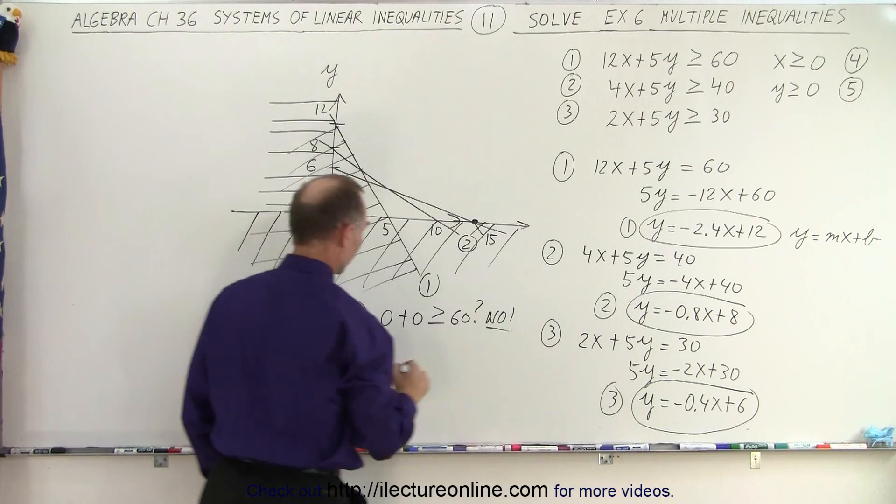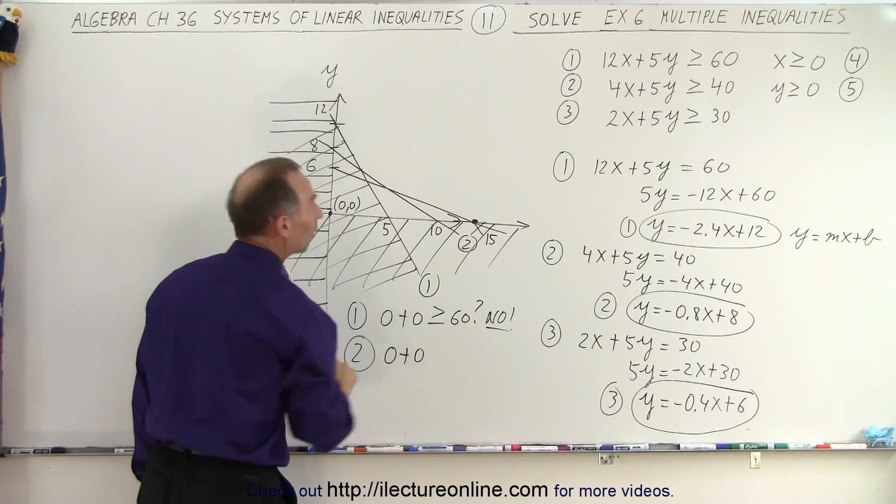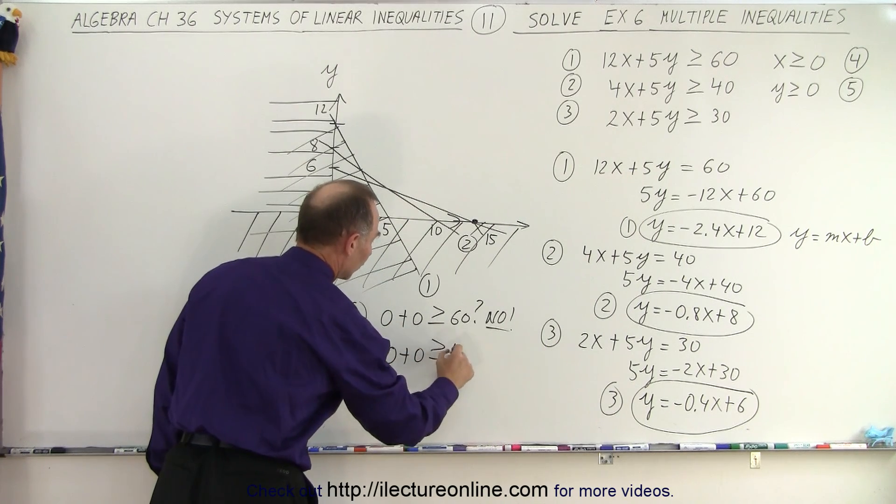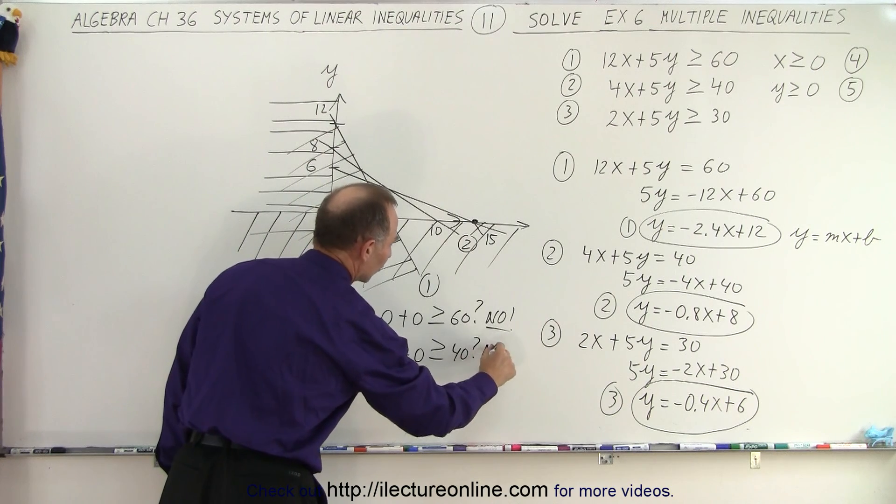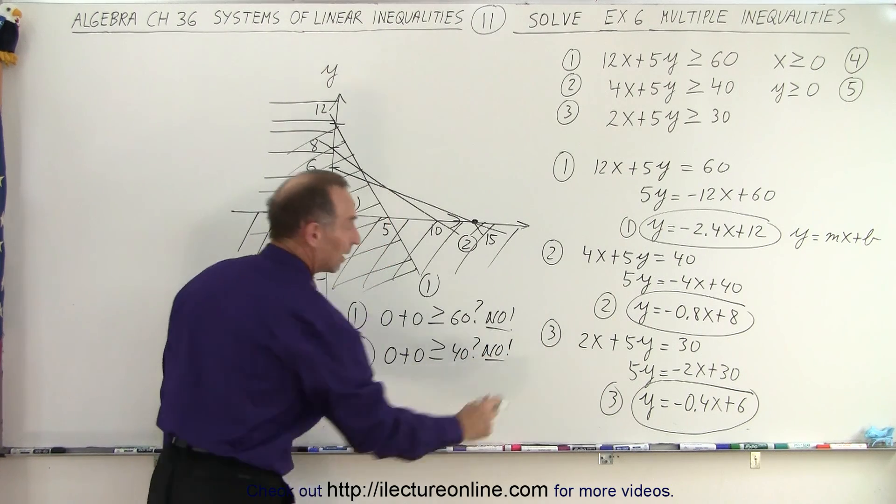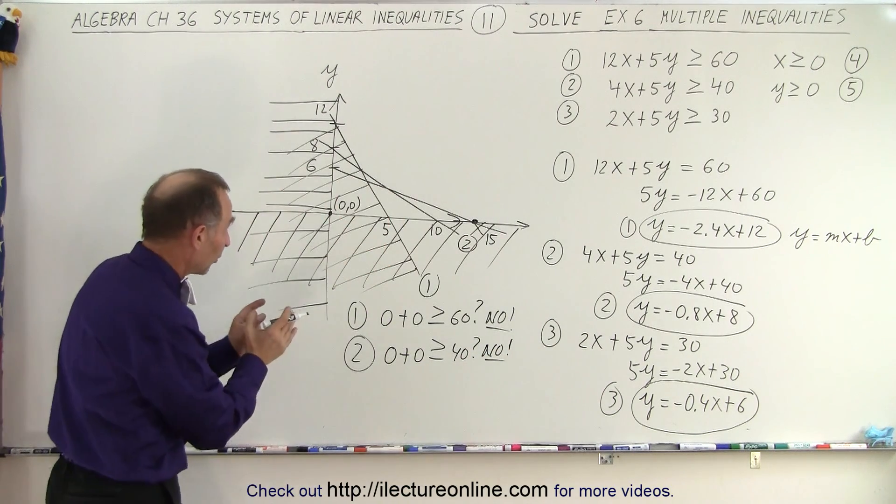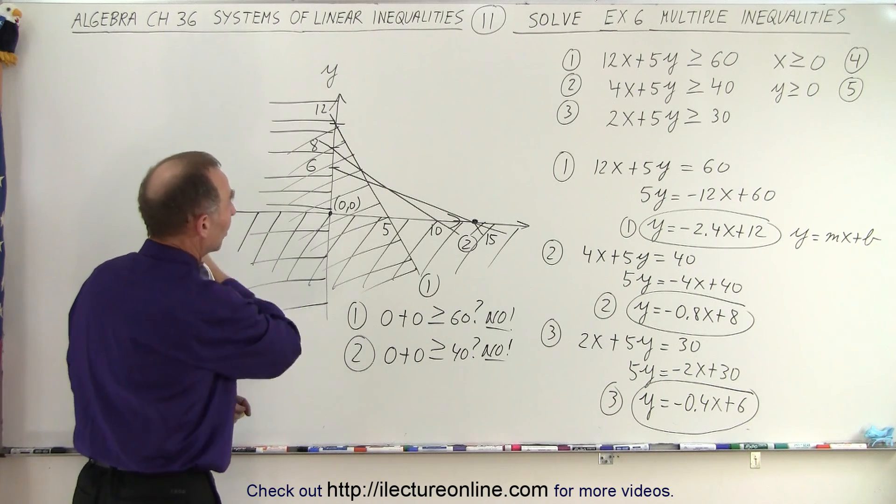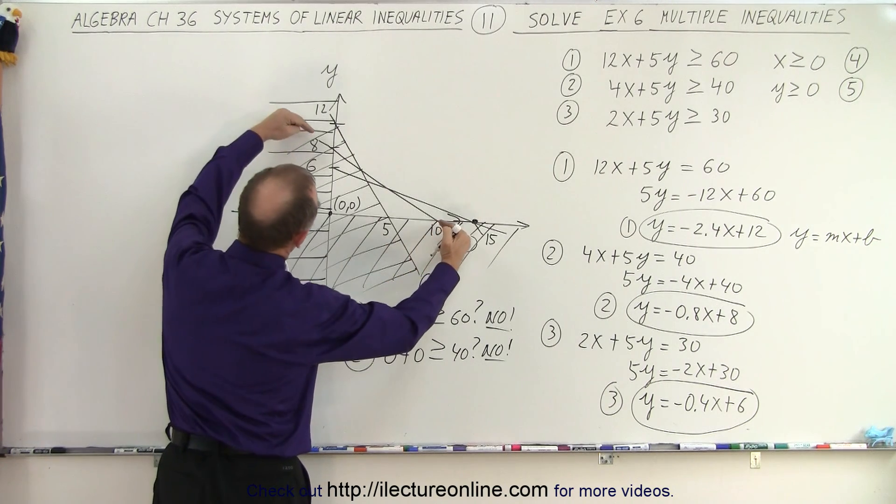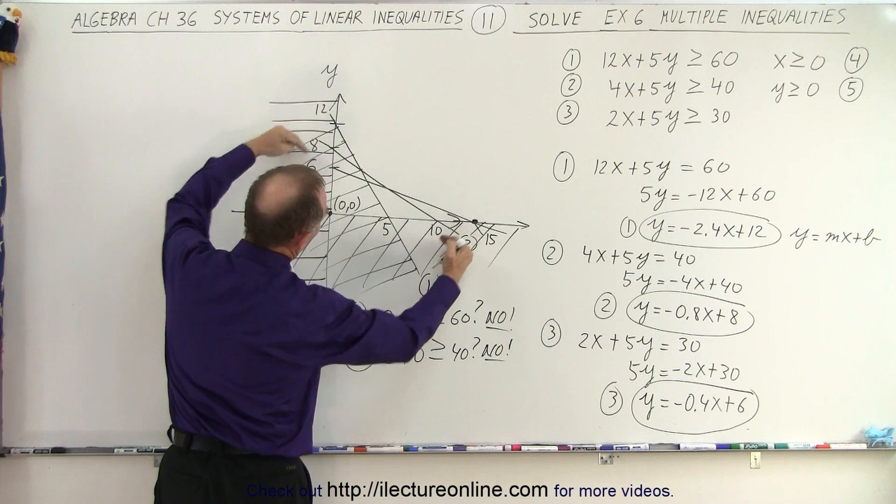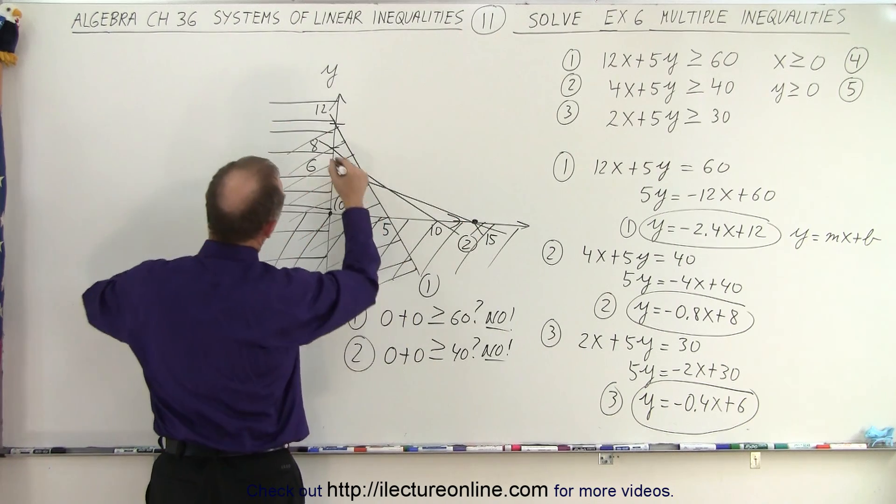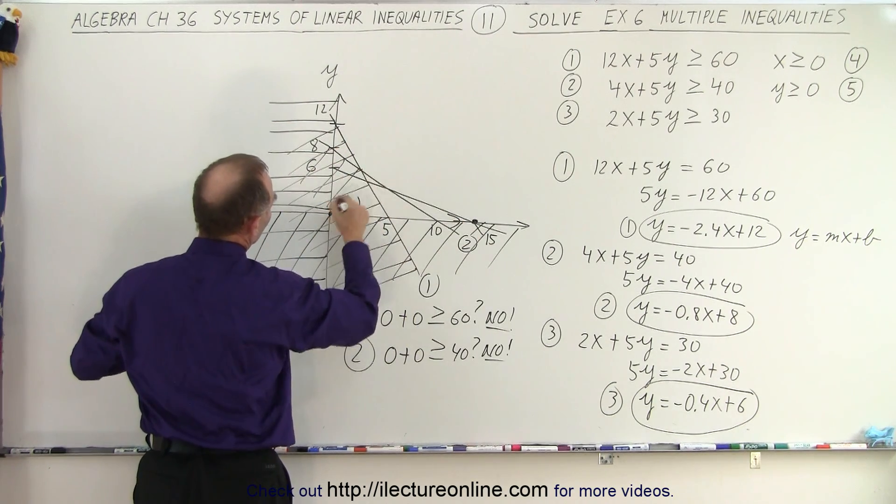Okay, for inequality number two, again we're going to plug in zero and zero for x and y, so end up with zero plus zero, is that greater than or equal to 40? Question mark. And of course the answer is no again. That means that region where the zero zero is at the origin does not belong to region according to line number two, so anything on this side of line number two is not part of the solution.